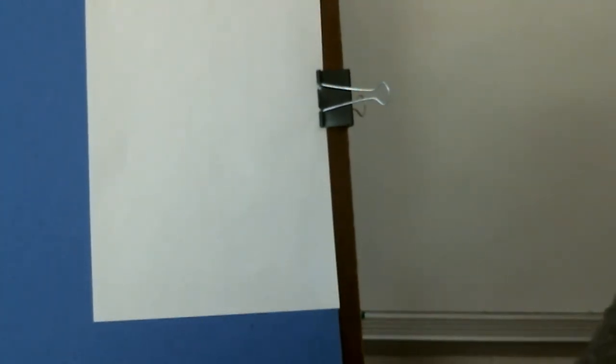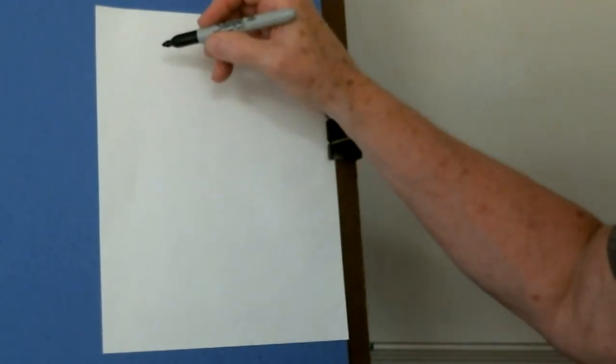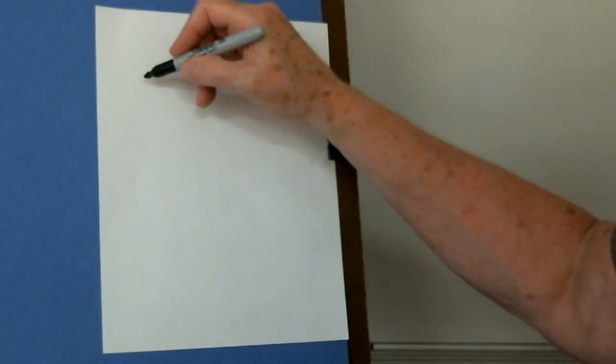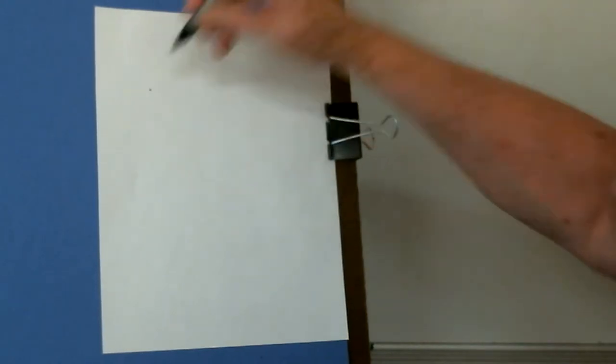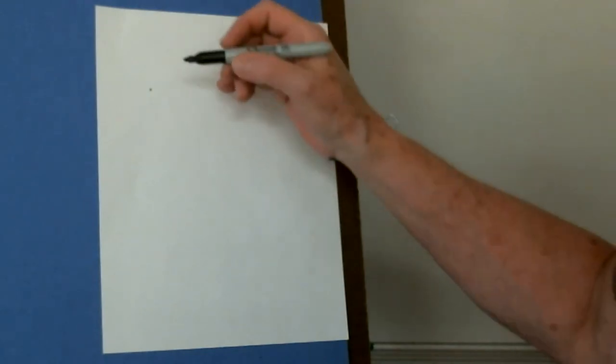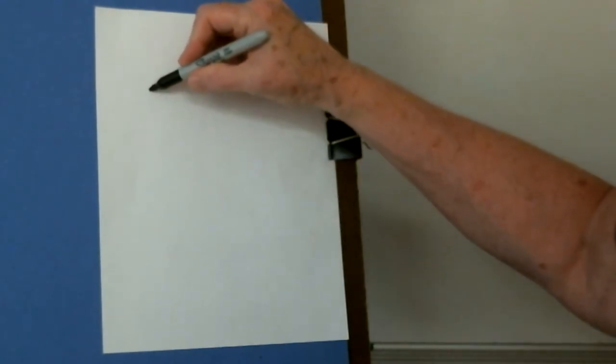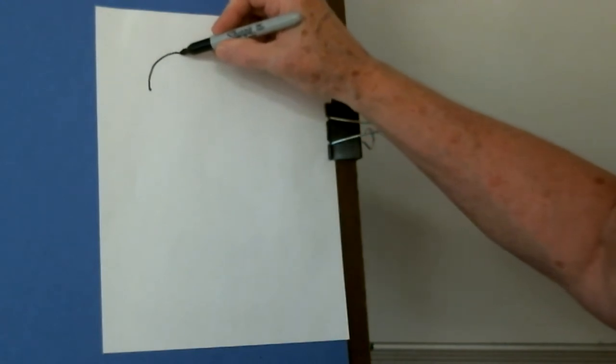So what I'm going to do is first of all, I'm going to take my marker and I'm going to place it on the paper. Then I'm going to lift it immediately. I'm not going to move it around. I'm just going to place it on the paper and then lift it. I want you to see that I've made a dot. Then I want you to put your marker back on that dot and start moving that dot around. I'm moving the dot.